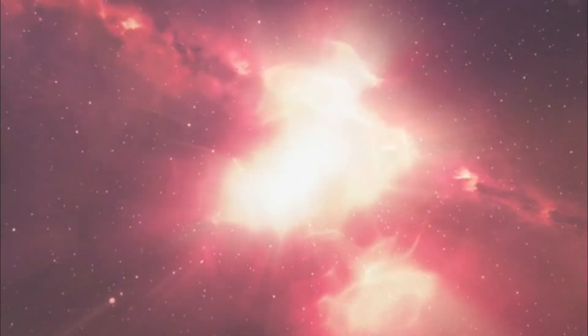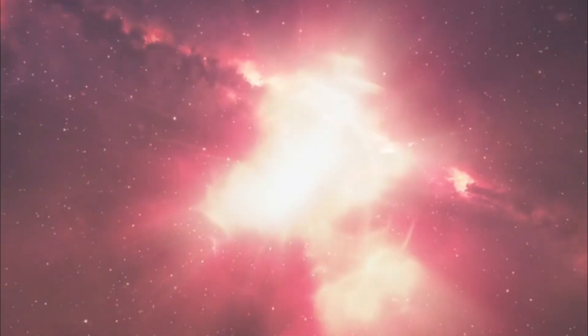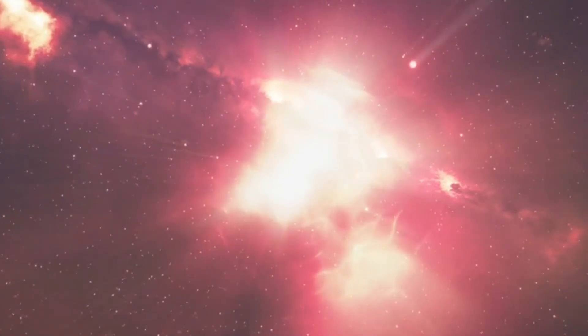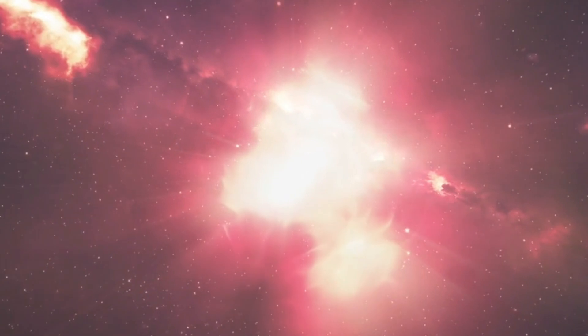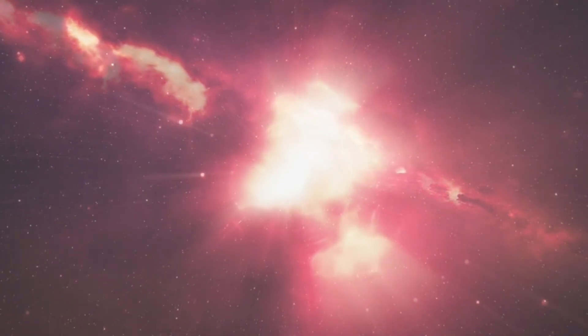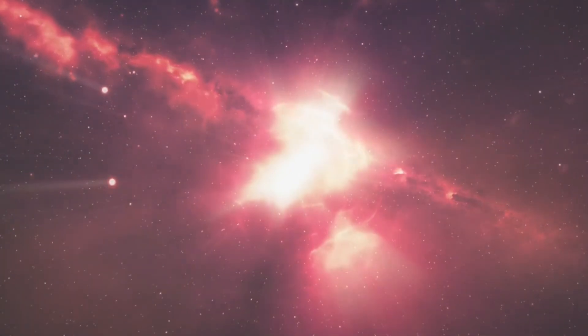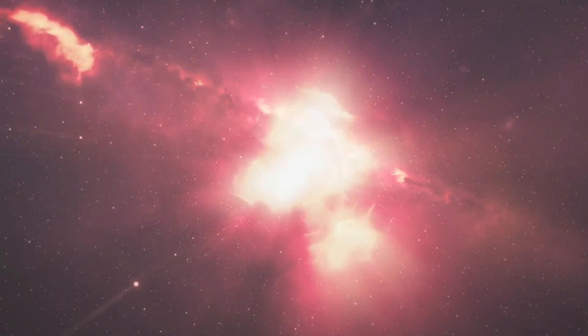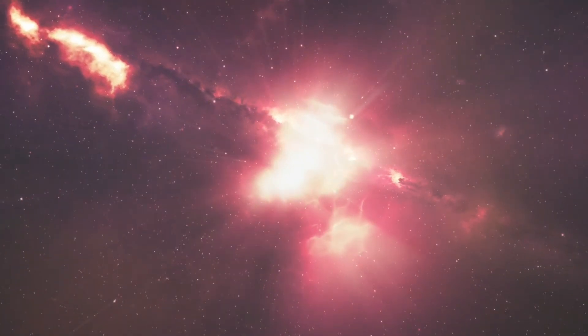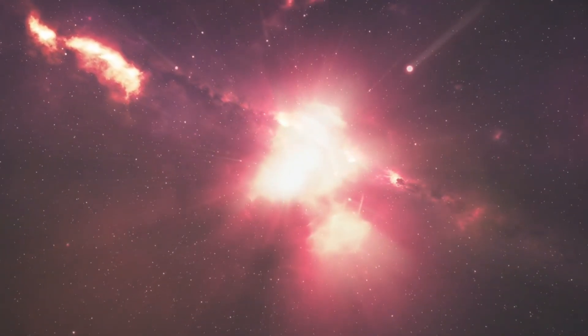The observable Universe, as defined by cosmologists, is the portion of the Universe that we can see from our vantage point on Earth. It extends as far as light has had time to travel since the Big Bang, which occurred approximately 13.8 billion years ago. This observable horizon encompasses an immense volume of space, populated by billions of galaxies, each containing billions of stars.